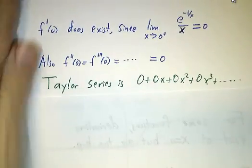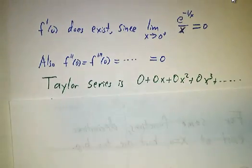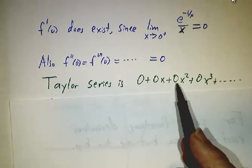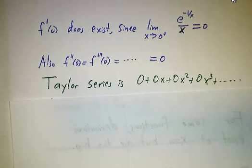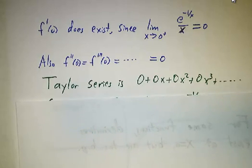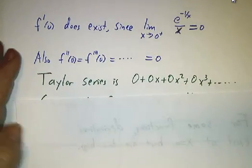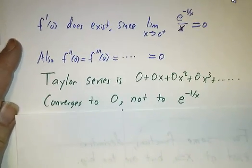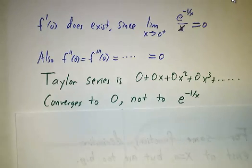All of these derivatives exist, and they're all 0, so the Taylor series would be 0 plus 0x plus 0x squared plus 0x cubed and so on. Well, that certainly converges. The radius convergence is infinite. All the terms are 0. It adds up to 0, but it doesn't add up to e to the minus 1 over x.